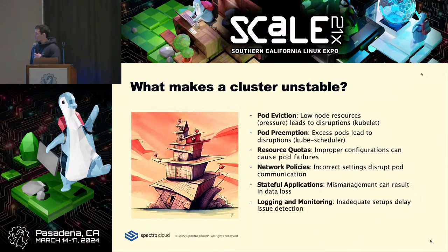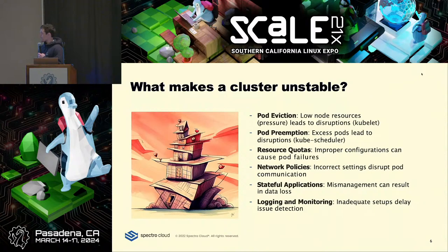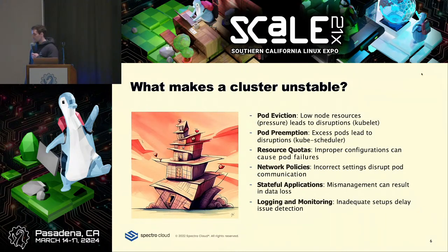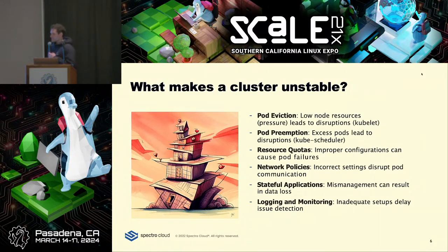Pod preemption, on the other hand, is where if you have nodes that have filled up and the scheduler is trying to place additional workload, it needs to make decisions about how to do that. It may evict running workloads that are already online because a new workload needs to be scheduled and it might have a higher priority. So priority gets taken into consideration with preemption as well.